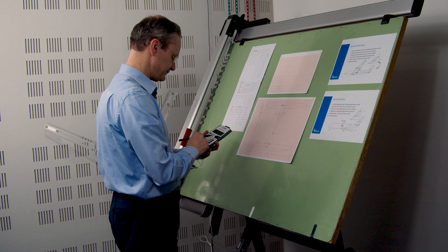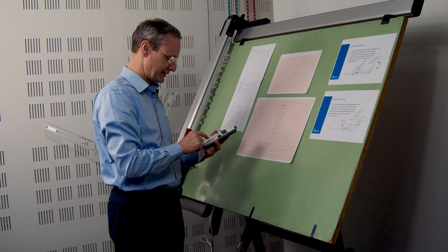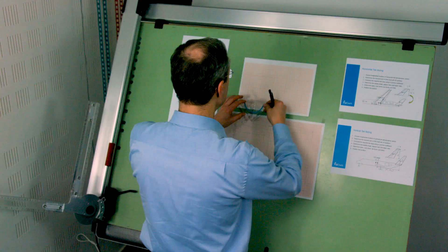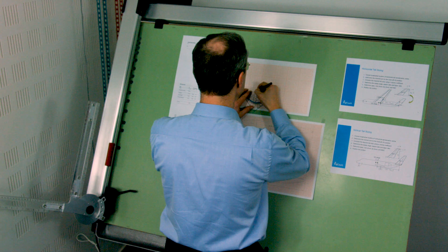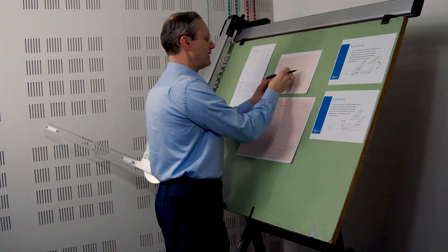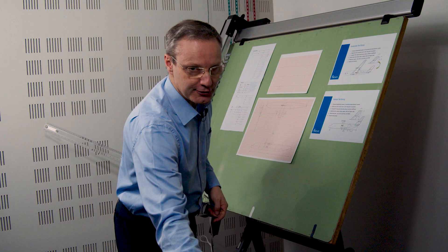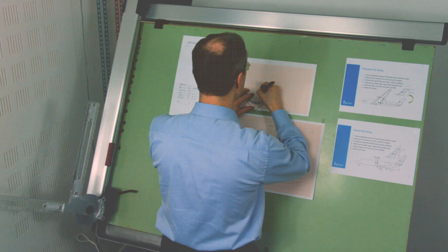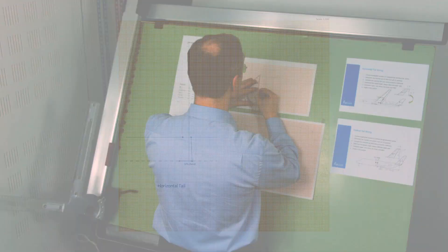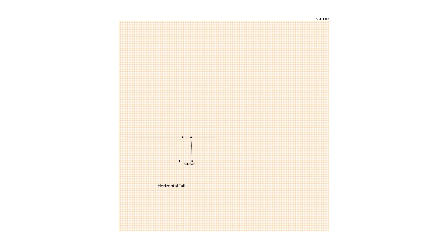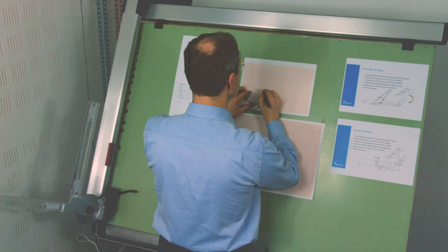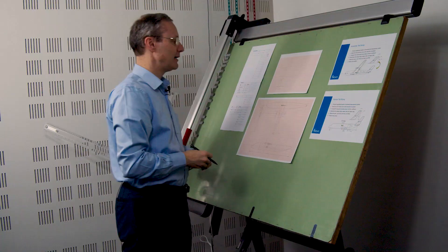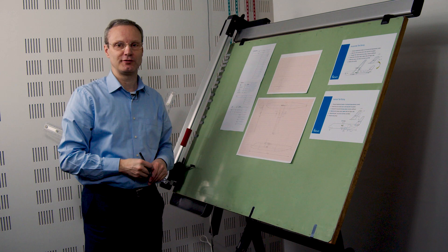We have to do the same calculation for the tip chord. The tip chord is 1.17 meters. 1.17 multiplied by 0.75 is 88 centimeters in front of the three-quarter chord line. One quarter behind it is 0.25 times 1.17, which is 29 centimeters behind the line. Now we can draw the trailing edge, draw the leading edge, and draw the tip chord. We also need to know the location of the mean aerodynamic chord, because the quarter point of that mean aerodynamic chord is going to be important.